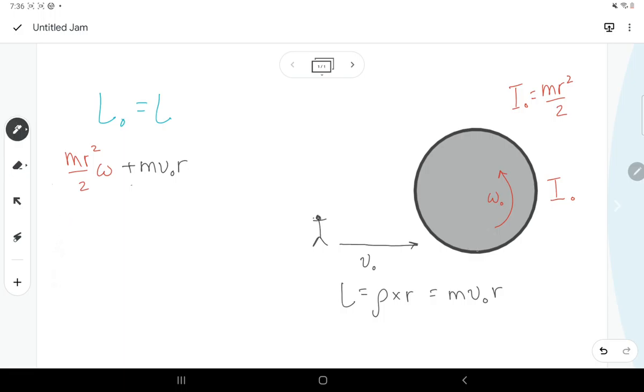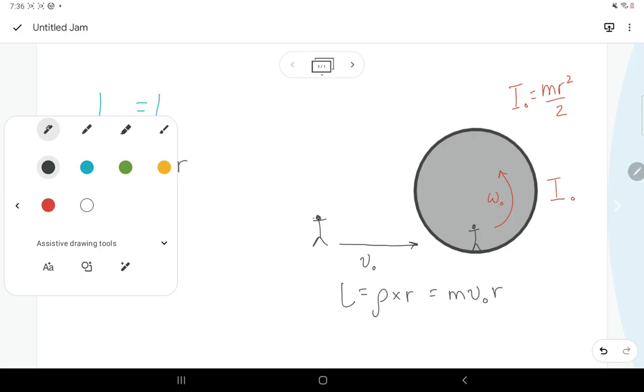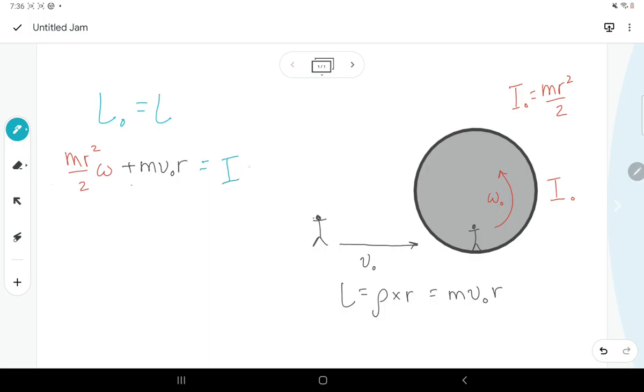So as we're spinning, the person runs and they jump on this and now they're standing here on the edge, and so we have to look at our final angular momentum. Our final angular momentum is going to be equal to our new I times our new omega. So we have to find our new I. Our new I is going to be the disk plus the person on it, so our I final is going to be equal to our I initial, which was mr squared over 2, plus the mass of the person times distance of the person to the pivot point, which we're assuming to the middle here, so that's that radius squared.